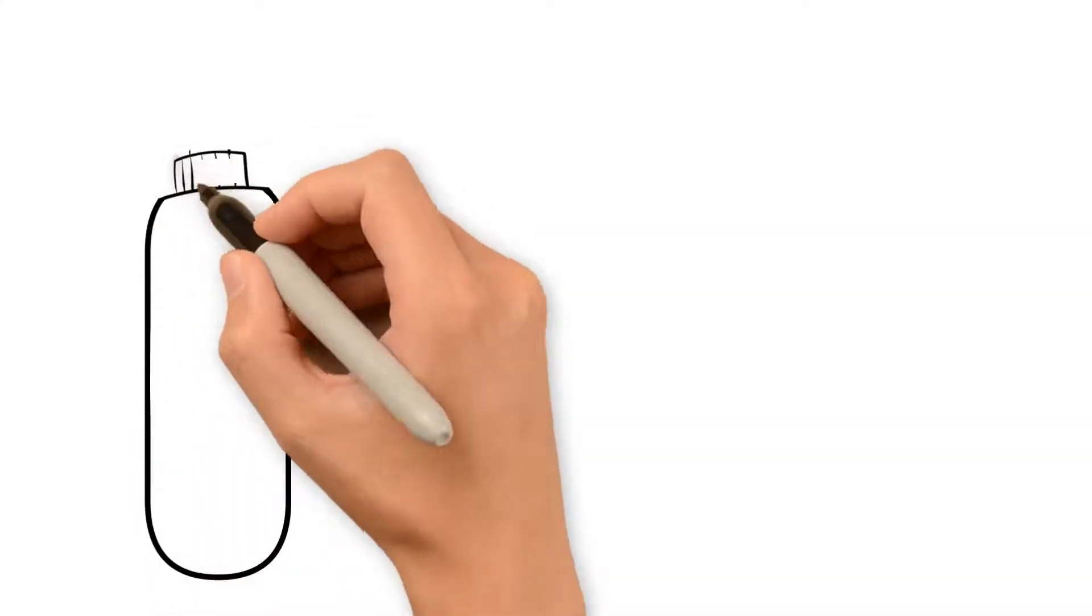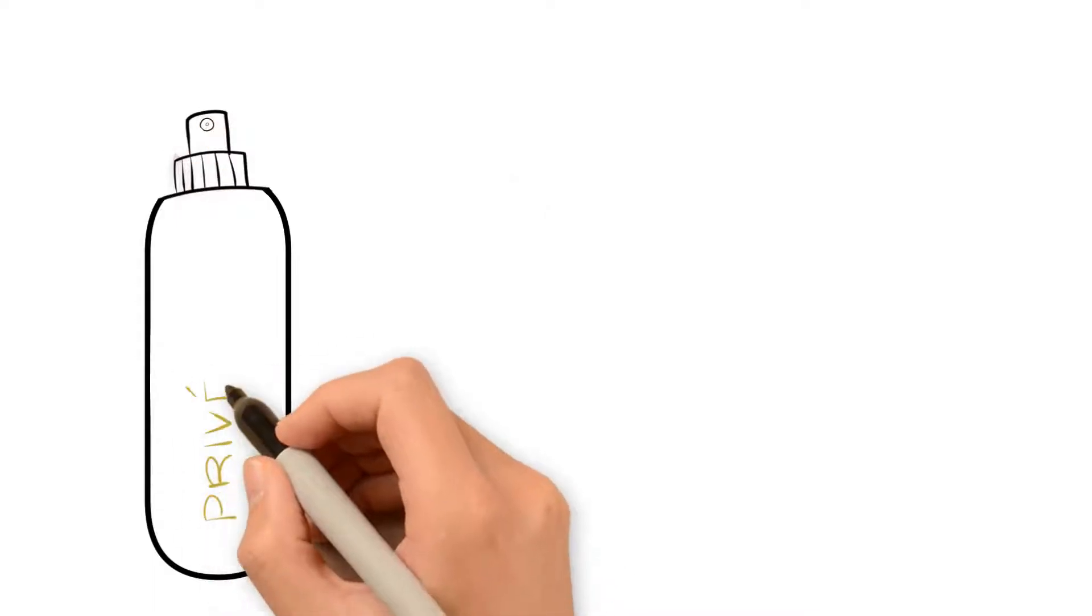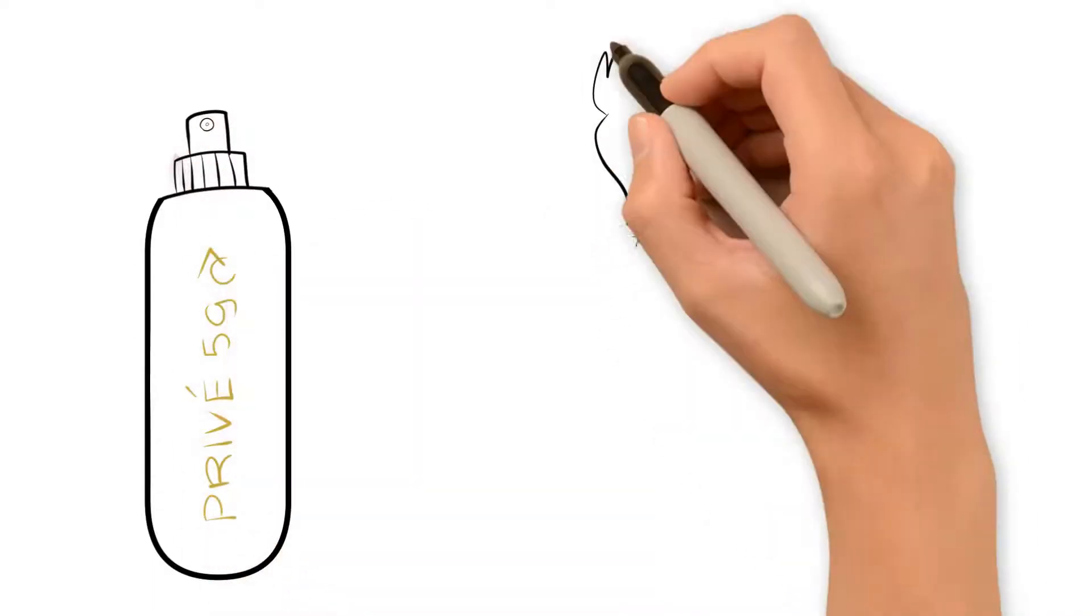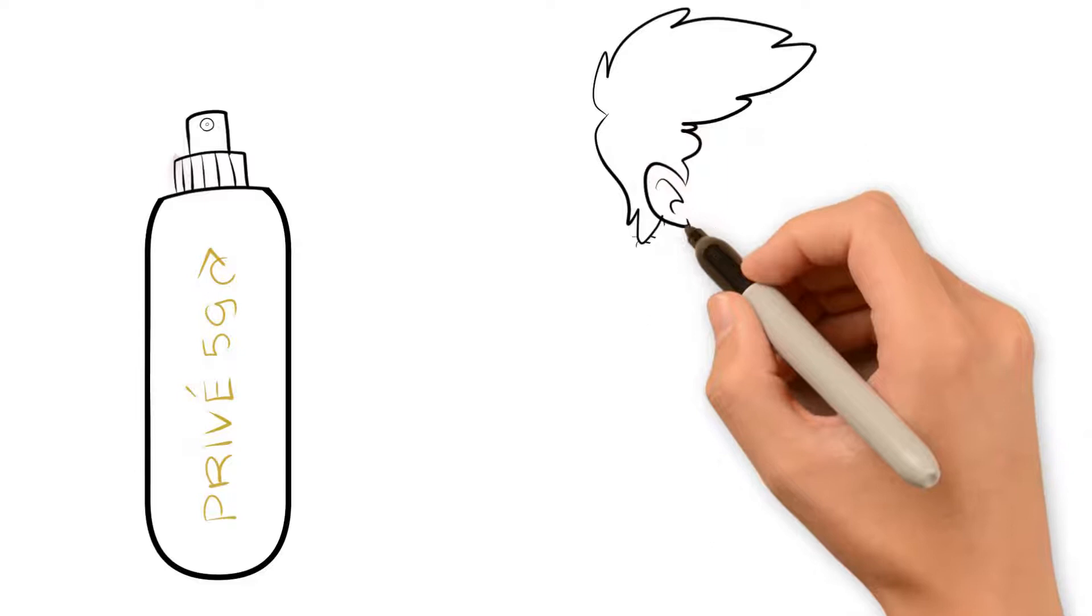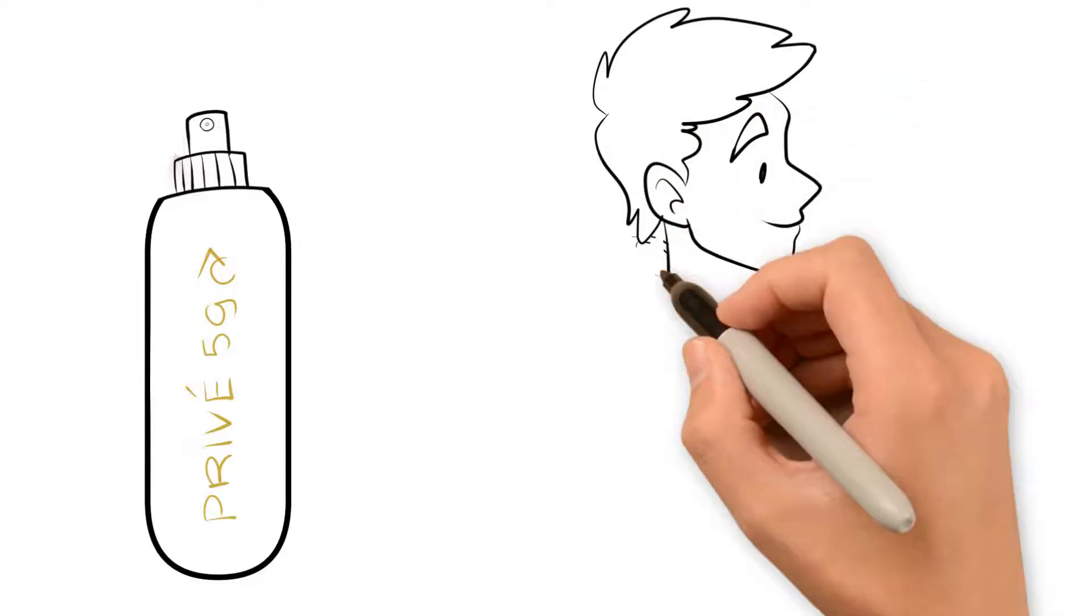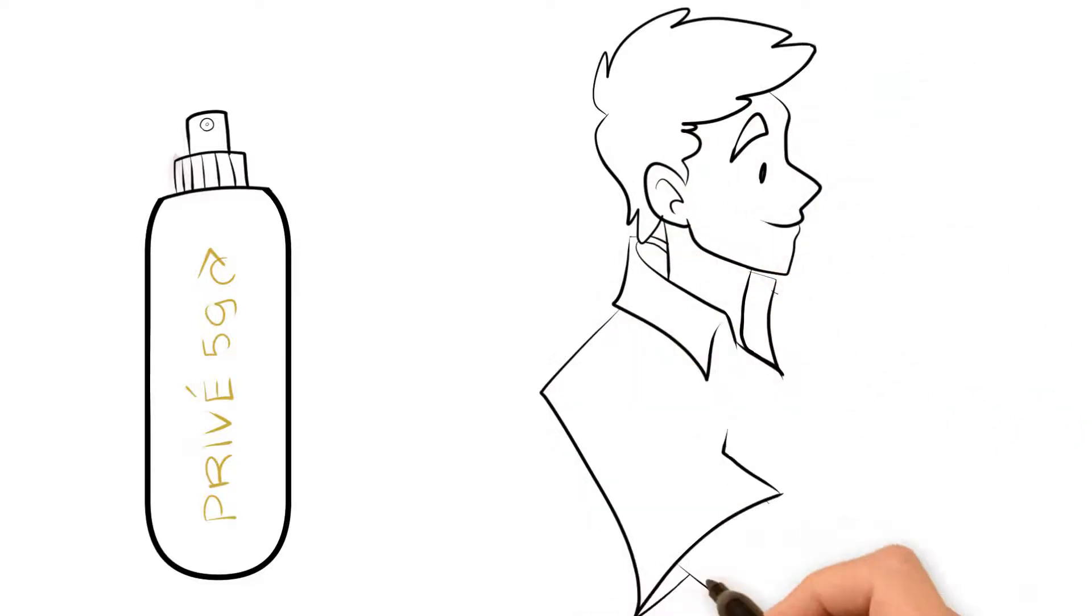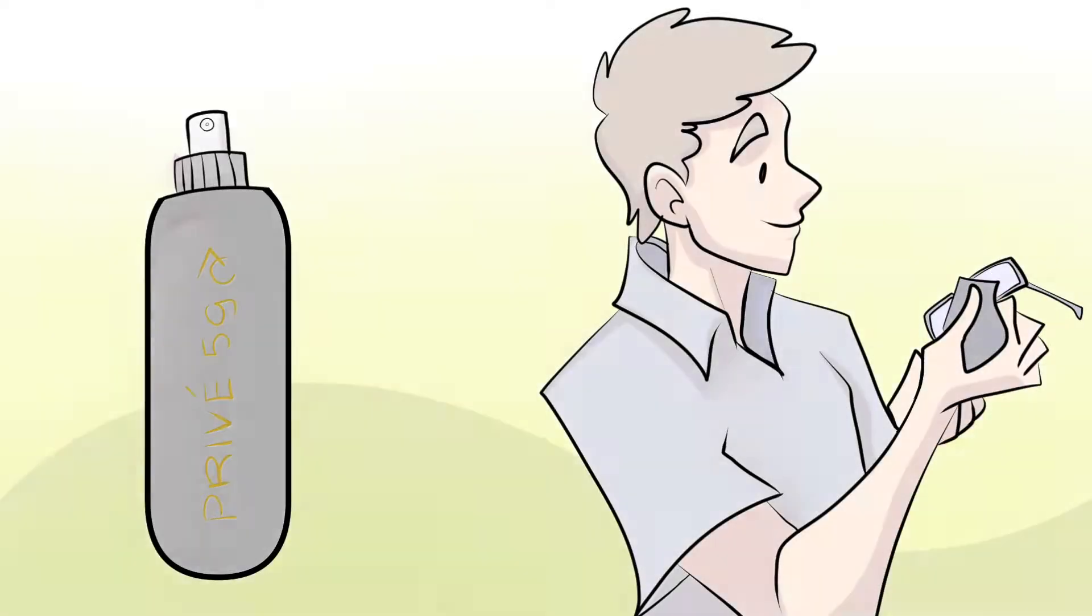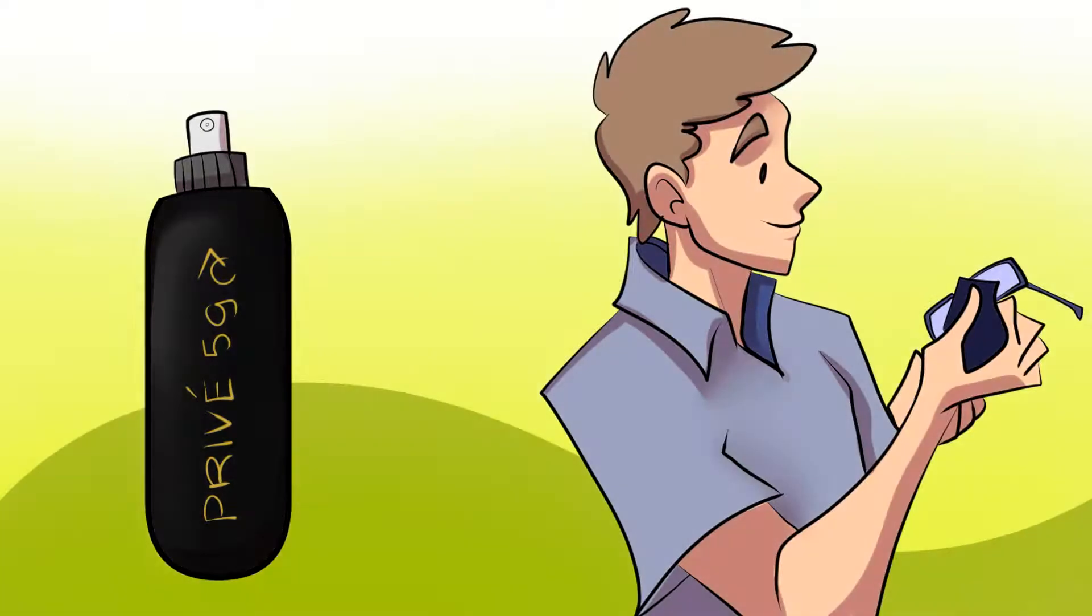Well, worry not. Preve 59 by InaCare is here to help keep your glasses clean and crystal clear. InaCare's non-toxic alcohol-free cleaning solution not only cleans your lenses, but it prevents condensation buildup to keep them fog-free. Preve 59 anti-fog spray uses a variety of natural ingredients that guarantee streak-free application and clear lenses.